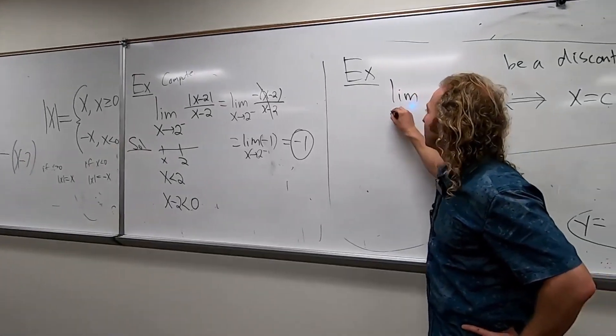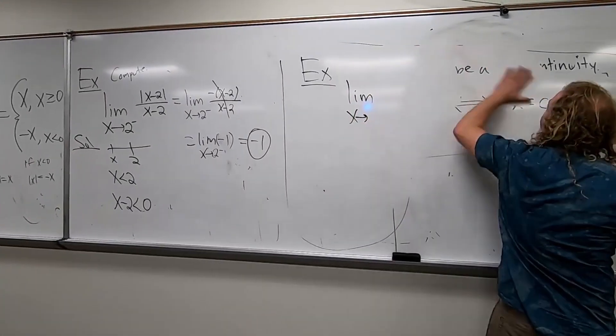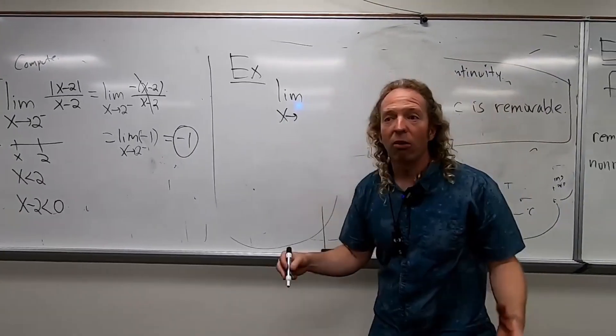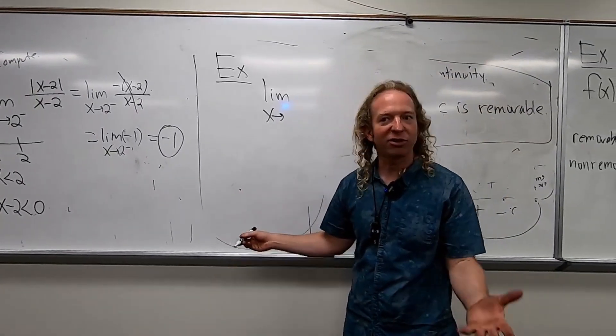Try this one. Limit as x approaches... let's approach, oh, I guess I should make it harder, right? It's college. Let's approach negative three from the right.